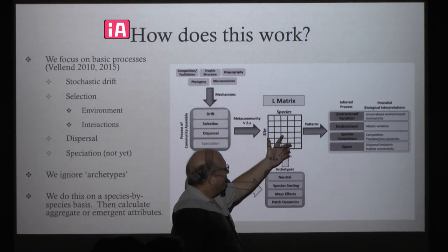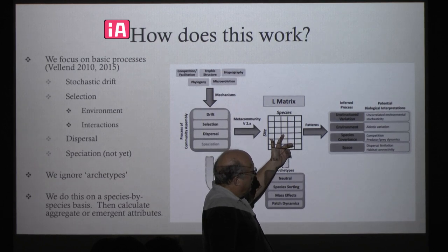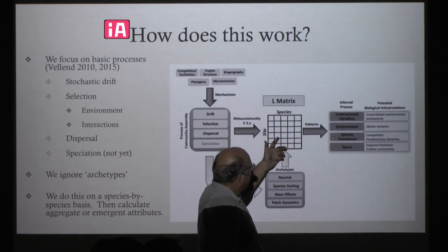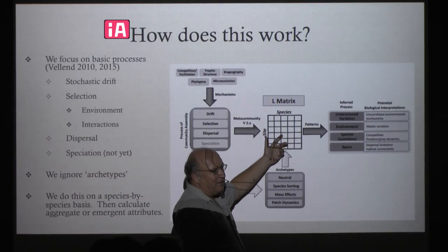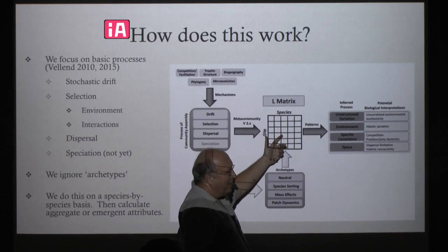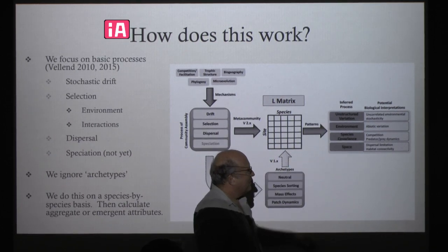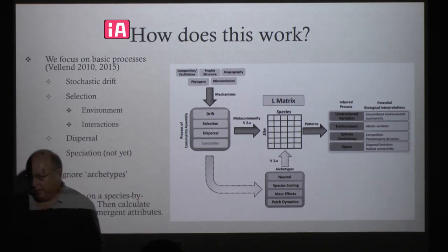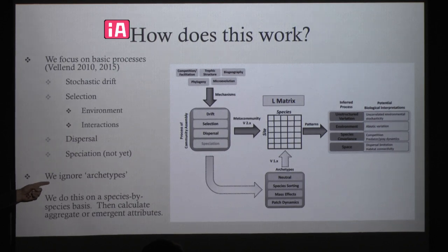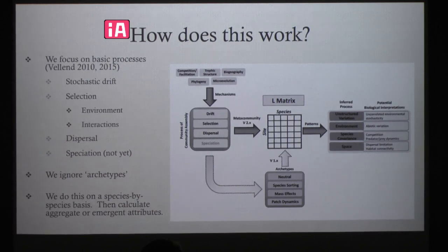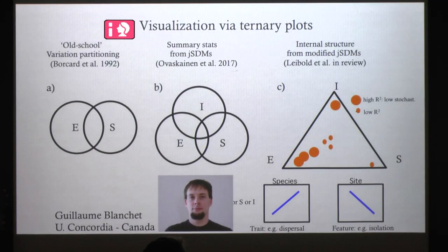The old version was to convert these processes into four highly idealized models and then analyze species distributions using variation partitioning. What we're suggesting is to skip that step — directly analyze the species-by-site matrix and relate it to these basic principles, tying those basic ideas to different types of variation in species distributions. Importantly, we ignore these four archetypes and do this on a species-by-species basis.